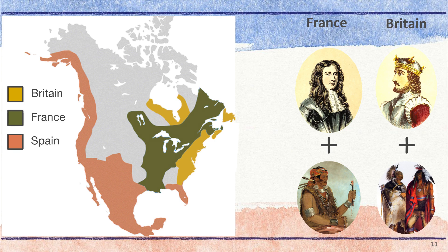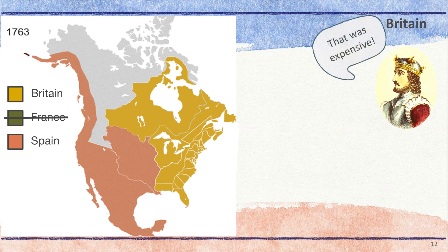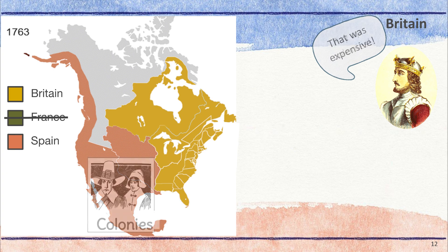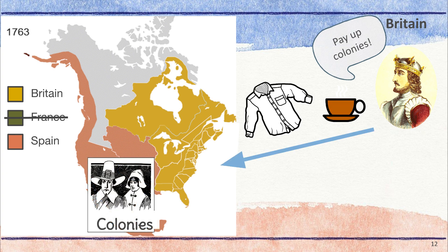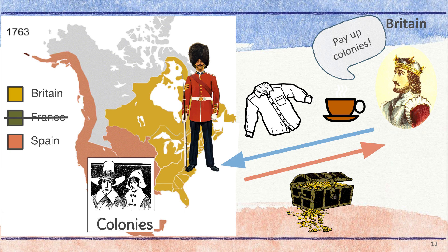After seven years of fighting, Britain and its Native American allies won and took over the land that belonged to France. Britain now controlled most of North America. Britain was trying to gain wealth from the New World, but the war had cost them money, equipment, and soldiers. To pay for the French and Indian War, the King of Britain decided to tax the colonists. This meant that when the colonists wanted to buy things from Britain, they had to pay extra money, called a tax. This money would go back to the King in Britain. Britain also passed laws that forced the colonists to let British soldiers stay in their homes and feed them.